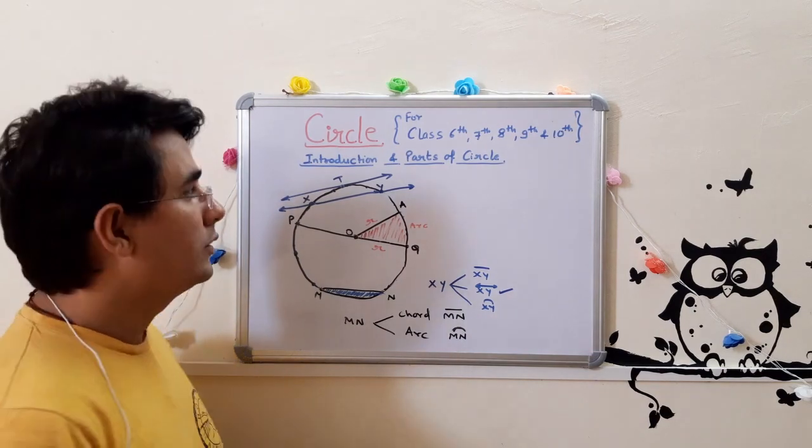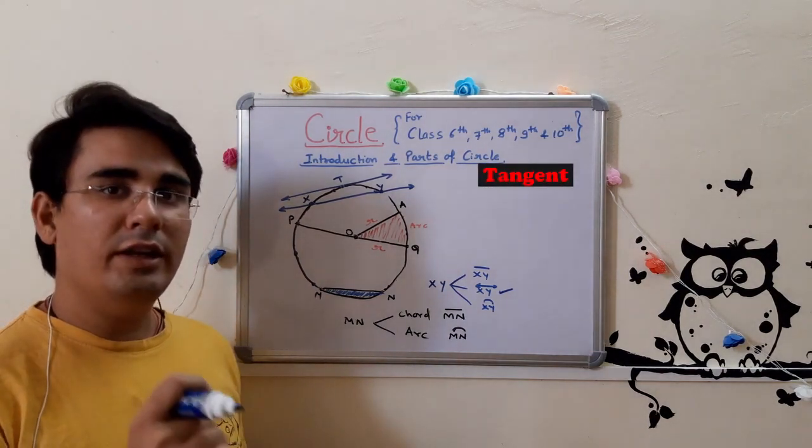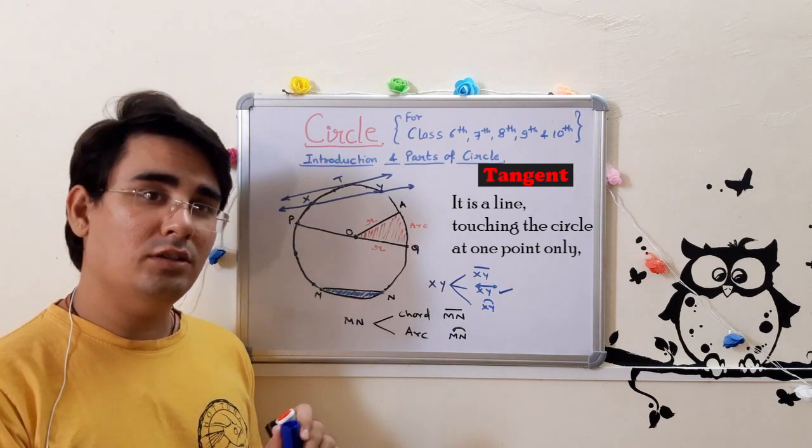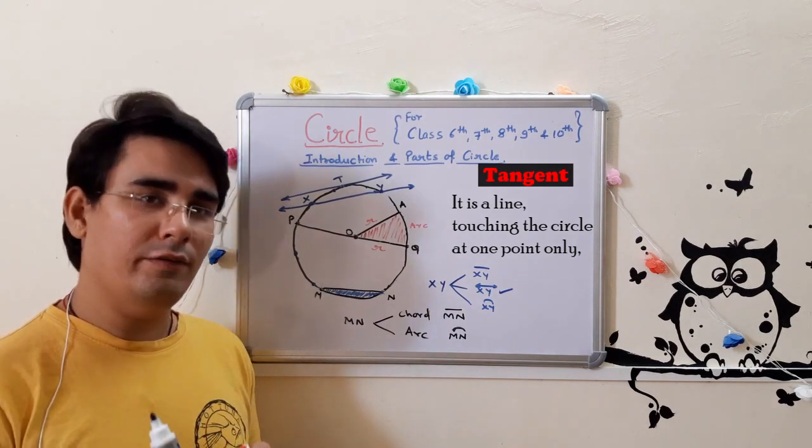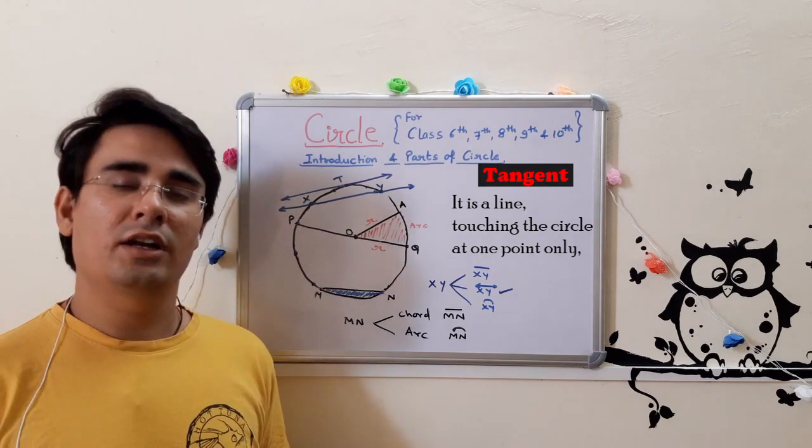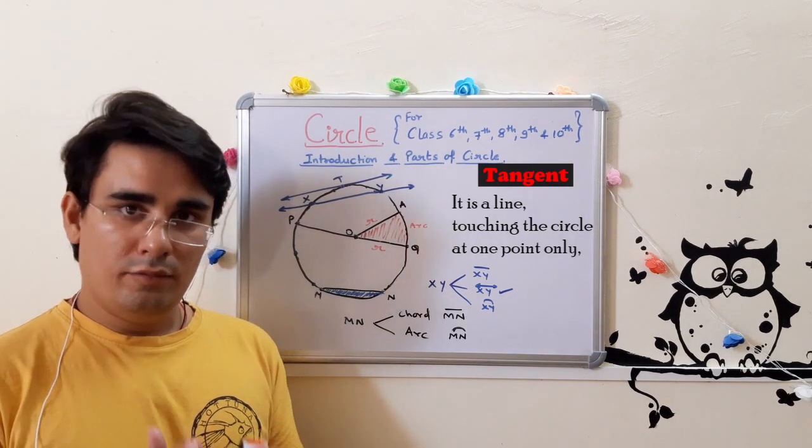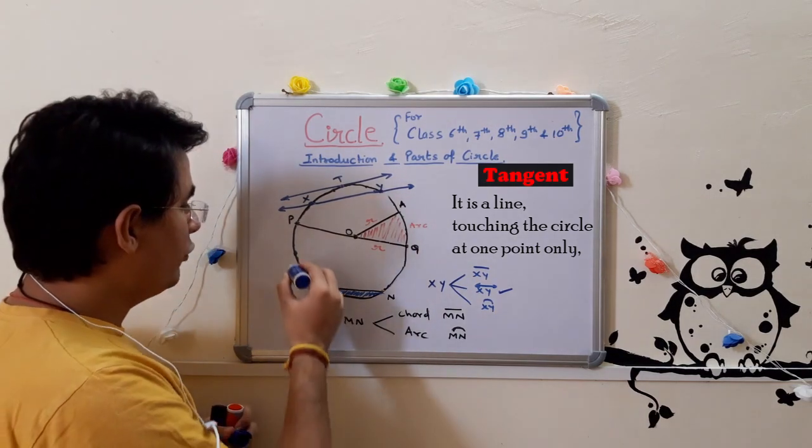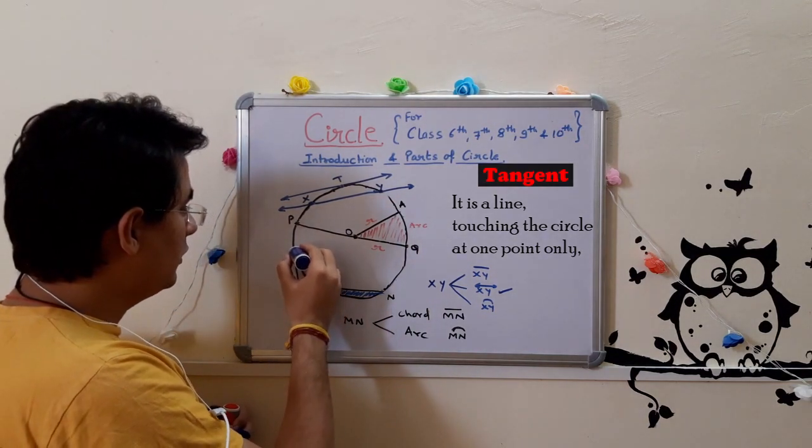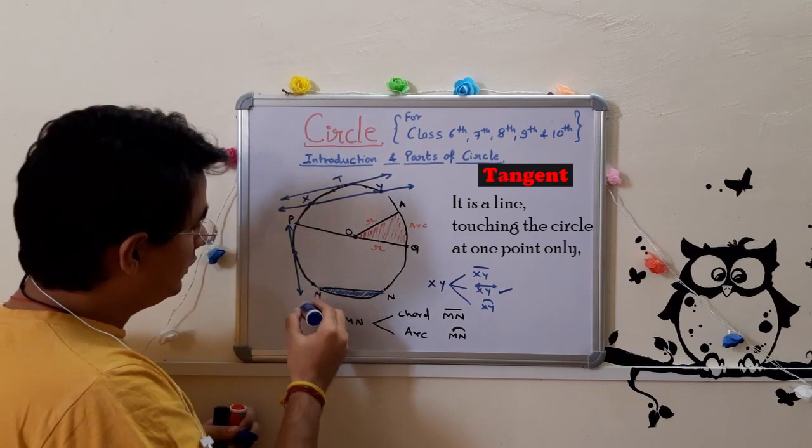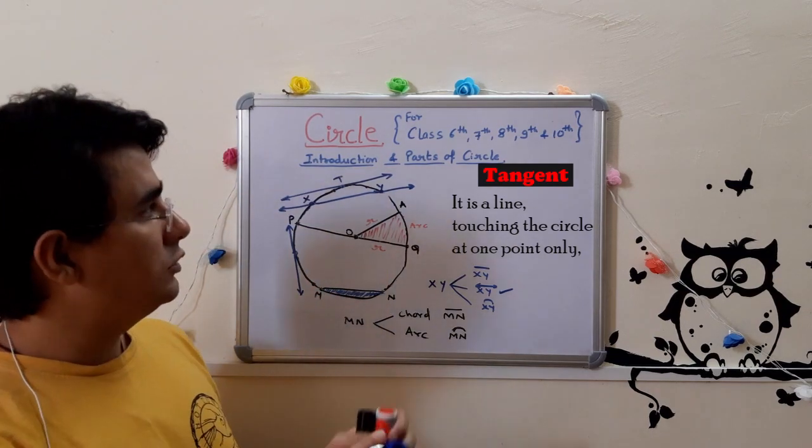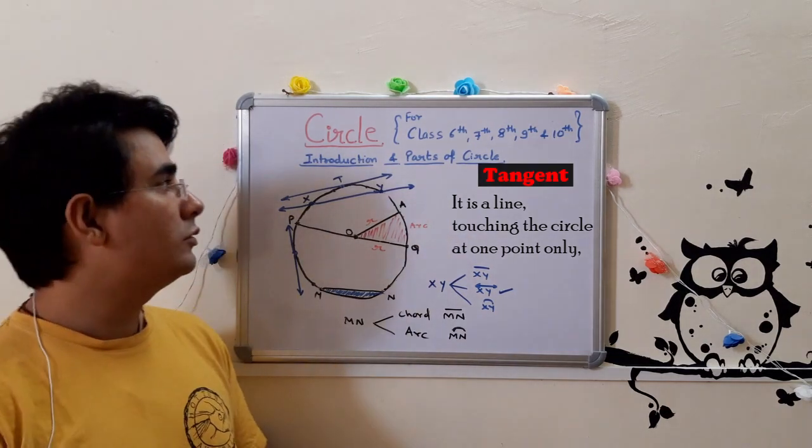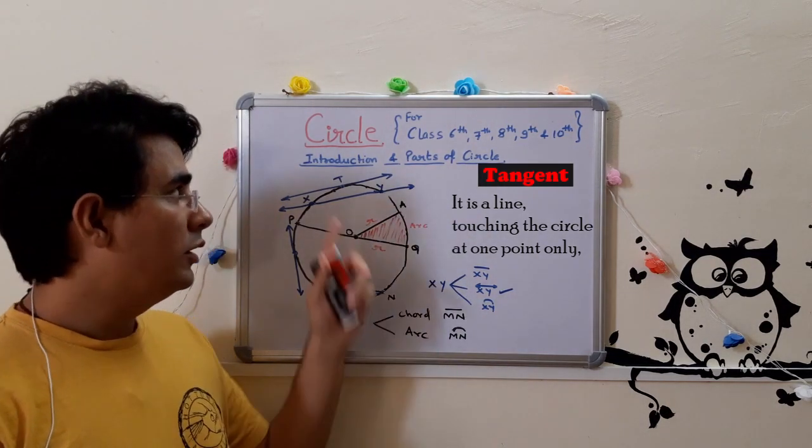If you touch one point, then secant's name becomes tangent. Tangent is a kind of secant but which is touching the circle at one point, which touches the circle at any one point. Here there is no other point, but it should not go inside, so it should go outside.